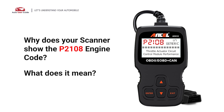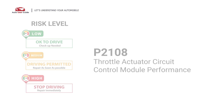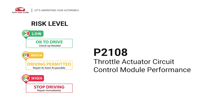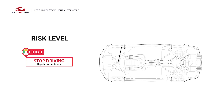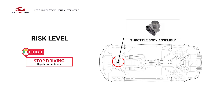Why does your scanner show the P2108 engine code? What does it mean? P2108 is a diagnostic trouble code for throttle actuator circuit control module performance. It indicates the vehicle's powertrain control module has detected a malfunction with the system that controls the throttle actuator control module.